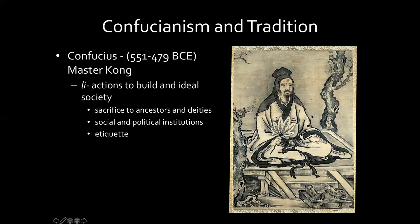Some of these Li — actions to build an ideal society — would include sacrifice to ancestors and deities, which all existed before Master Kong. Social and political institutions reflect this divine order. And etiquette: for Master Kong it's about knowing your relationship to the other person and the rules appropriate to those particular situations.